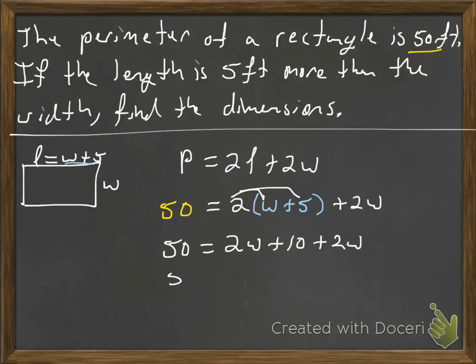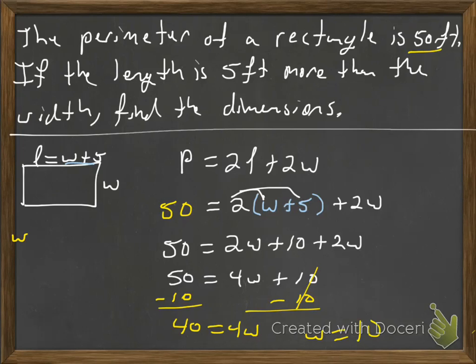I have like terms of 2w, so I'm going to combine them together to make 4w. 50 equals 4w plus 10, subtract 10 from both sides. 40 is equal to 4w, so that's going to tell us that after we divide by 4, that the width is 10, and if the length is 5 more, the length should be 15.